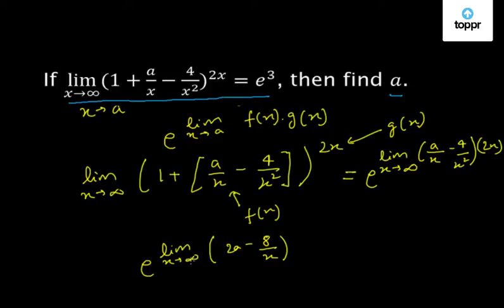If we substitute x equal to infinity in this, we get e^(2a - 8/∞). Since 8/∞ is 0, this comes out to be e^(2a).